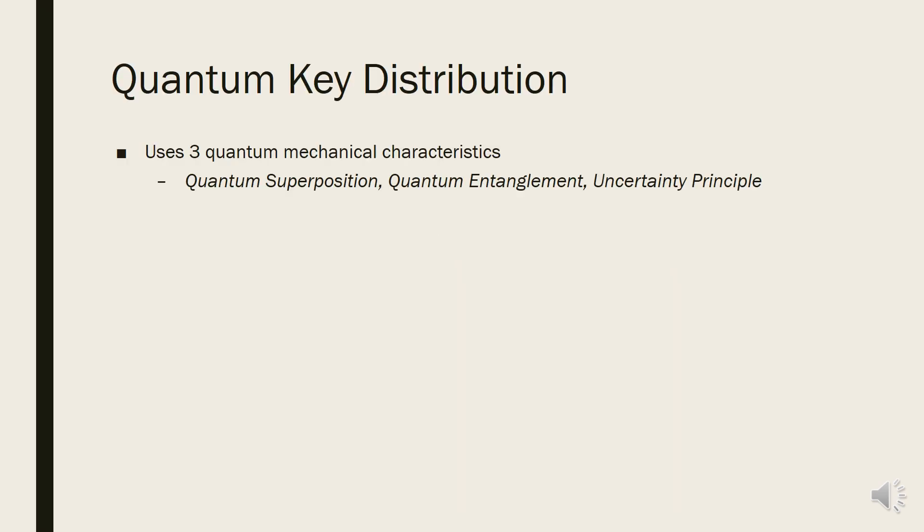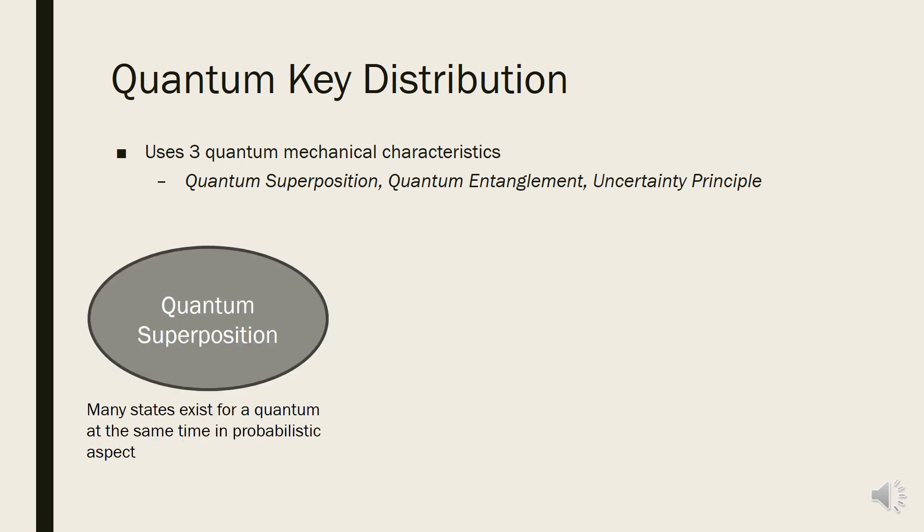The representative system for quantum cryptography is quantum key distribution. Quantum cryptography uses three characteristics of quantum mechanics. First, quantum superposition means that there exist many states for a quantum at the same time in probabilistic aspect. We can't know the exact state for a quantum before we measure the state of it.